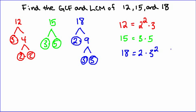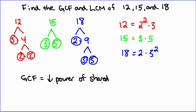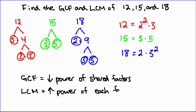Just like in the previous examples, we are going to compare powers. The key is: when finding the GCF, you're looking for the lowest power of the shared factors. And for the LCM, you're looking for the highest power of each factor. It doesn't necessarily have to be shared to be part of the LCM, but for the GCF the factors need to be shared.